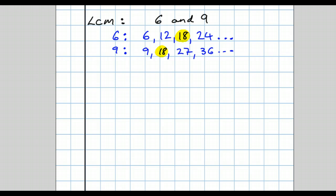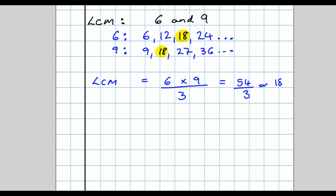But let's look at a quicker way of doing it. The lowest common multiple of any two numbers equals: you multiply the numbers together and divide by the highest common factor. 6 times 9 is 54. 54 over 3, or 18.